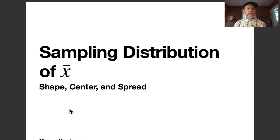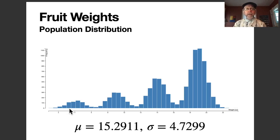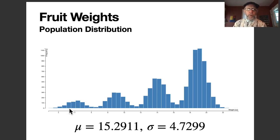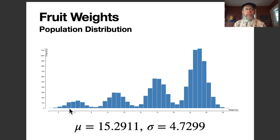Here I have a histogram of fruit weights. There were four different kinds of fruits in this population, which is why you see the multimodal graph — four different modes, one for each type of fruit. I'm going to describe the center with the mean, which is about 59.3 ounces, and the spread with the standard deviation, which is about 4.7 ounces.